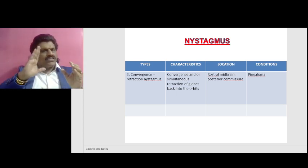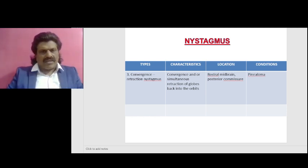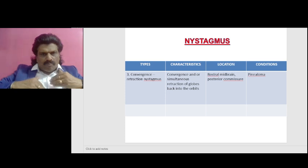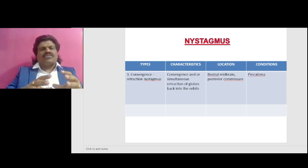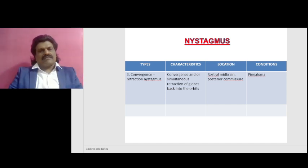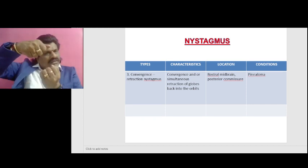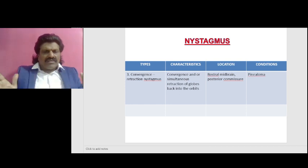So the right lateral rectus and left medial rectus move together, and the eyes move to one side. But in a supranuclear lesion like Parinaud syndrome, there is simultaneous activation of both agonist and antagonist. Both medial recti may fire together, and both the superior recti and inferior recti may fire together. When both medial recti fire together, there is convergence.